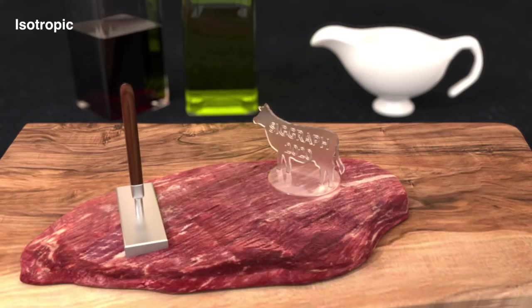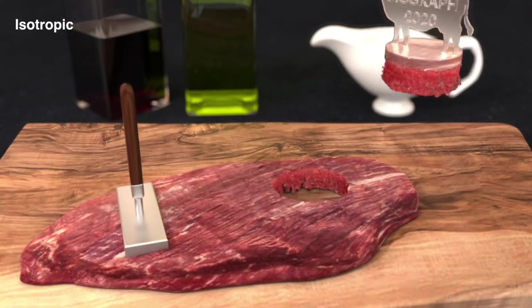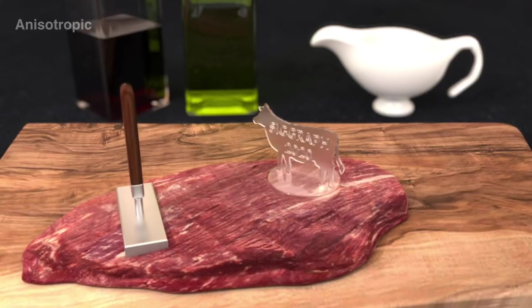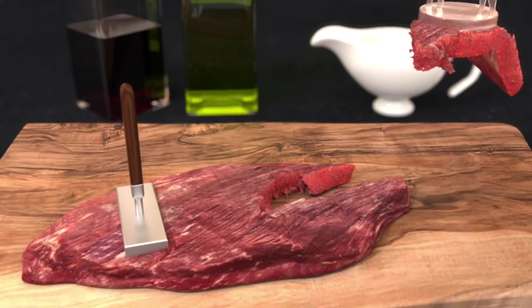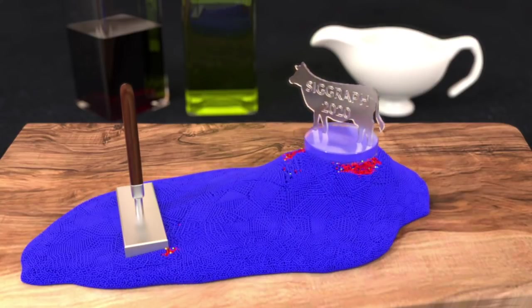Finally, we want to simulate tearing some raw meat, but isotropic damage is not sufficient to model this. When we add anisotropic damage to the meat, we reveal the intricate tearing along the muscle fibers. And here, we visualize the evolving damage.